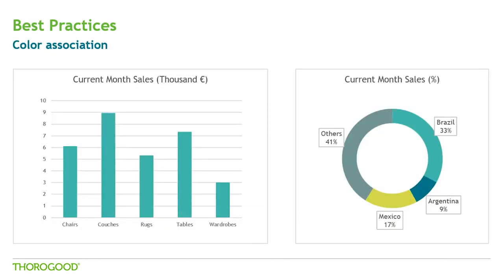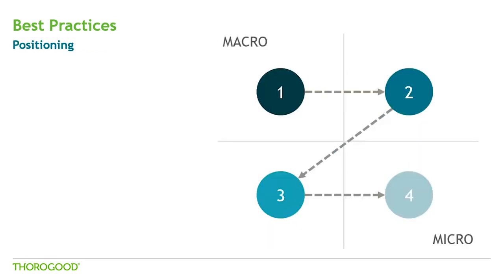One last thing about the use of color: suppose you have two charts on the same screen. Can you tell if the sales on the left belong just to Brazil or to the whole company? It's hard to say, because your brain will see the color and make that association — thinking those sales correspond only to the country with that color. So be careful not to use the same color in different places unless they actually mean the same thing.